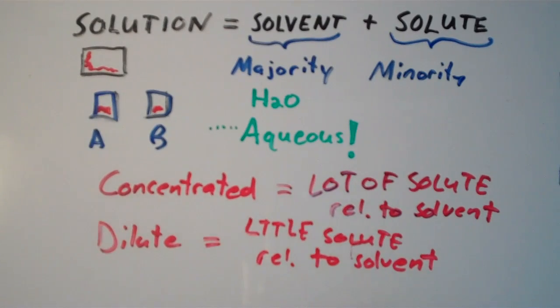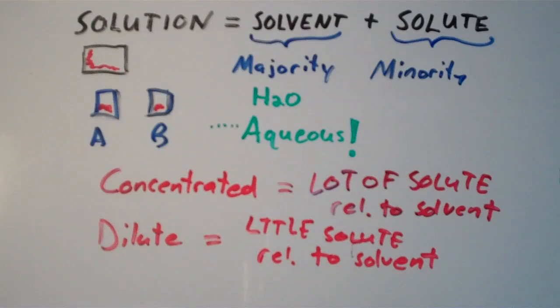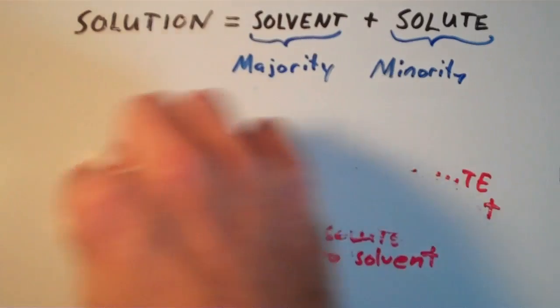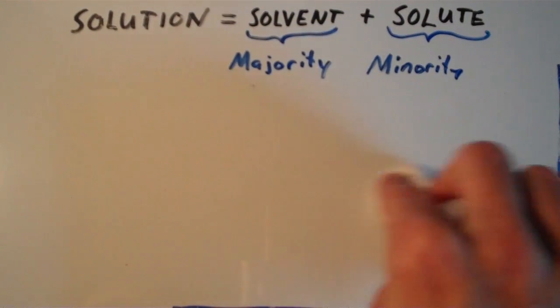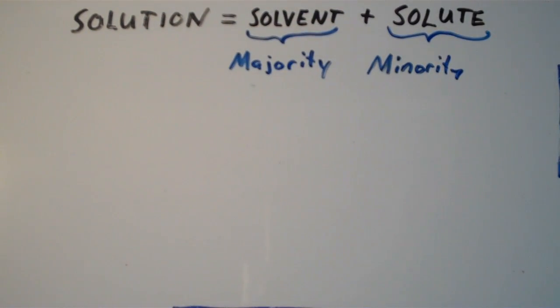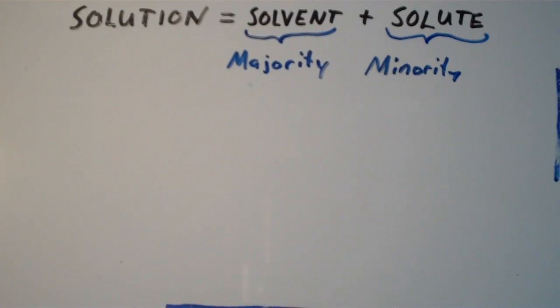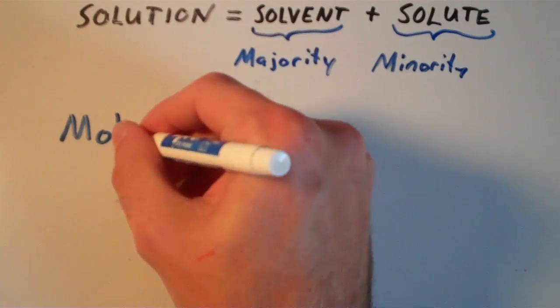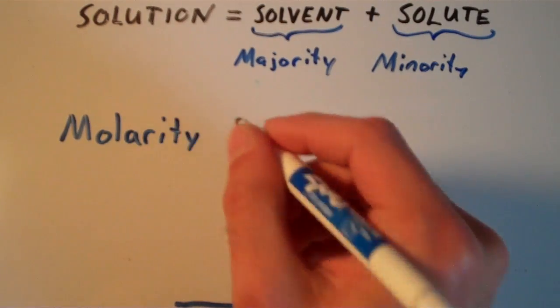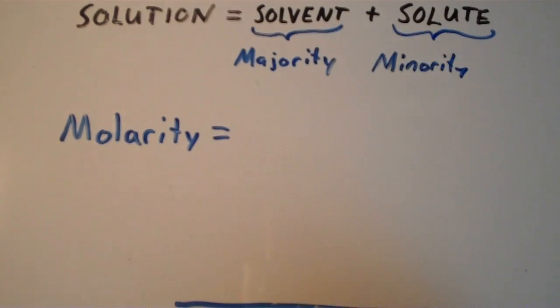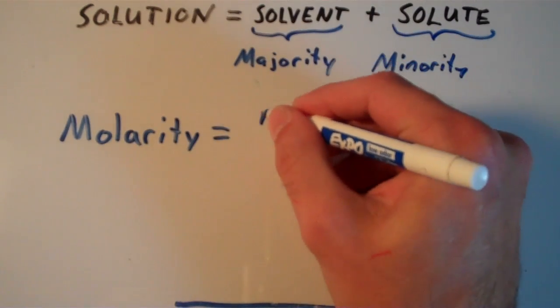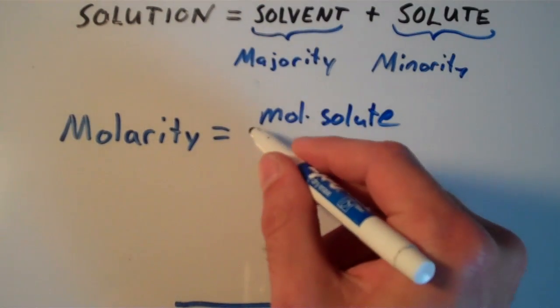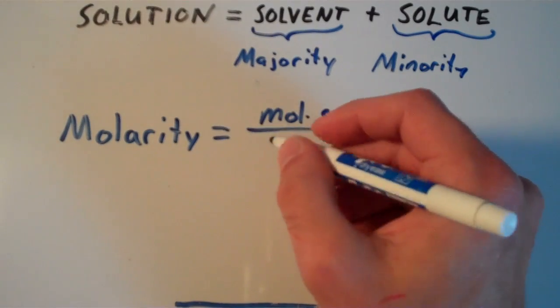So we need to find a way to quantify the concentration of a solution. And the most common way to quantify the concentration of a solution, there are many ways to do it, but the most common way is using molarity. So molarity is the amount of solute you have in moles divided by the total volume of your solution in liters.